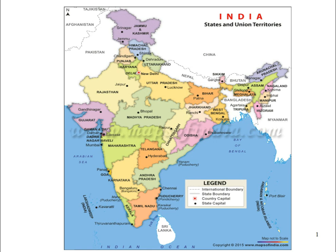There are diverse types of people with different culture, different languages, and different customs. With such a large country and a diverse population, it is not possible to have a single government. So the government of India is divided into a central government, which takes care of the whole of India, and a state government, which takes care of the interests of the various states.